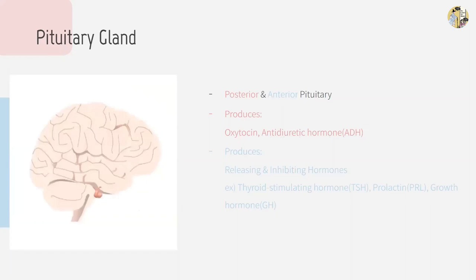There are two pituitary glands: posterior and anterior. The posterior pituitary gland produces oxytocin, which causes uterine muscles to contract during childbirth in a positive feedback loop. Oxytocin is also released when you're feeling happiness. The other hormone released from the posterior pituitary gland is antidiuretic hormone, or ADH, which helps the kidney reabsorb water instead of excreting it through urine.